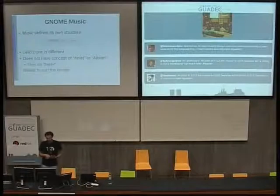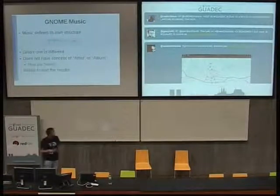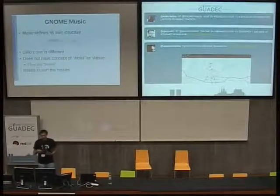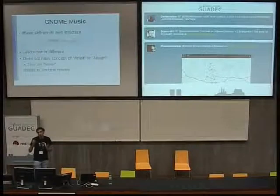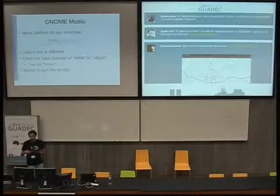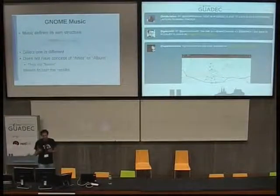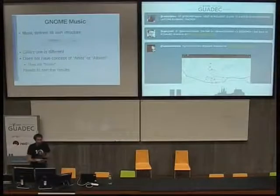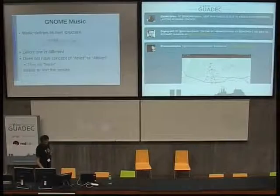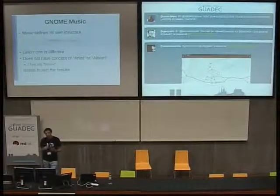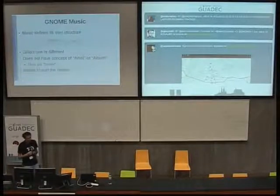In Grilo, all content that is not final content — audio, image, or video — is called a box. A box is like a container that you can browse inside to get other boxes or music. For instance, an artist is a box, an album is a box that contains songs, and the songs are Grilo media audio objects. We don't have that concept currently. Another problem is that Music wants to sort results in specific ways, and what Grilo is currently providing doesn't suit those requirements.